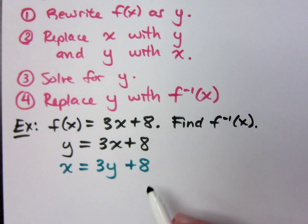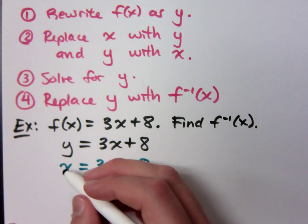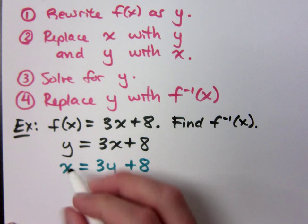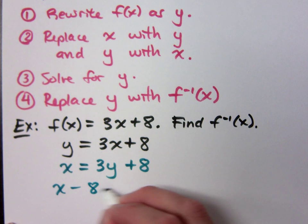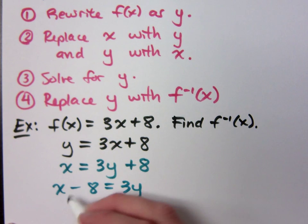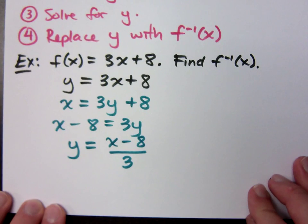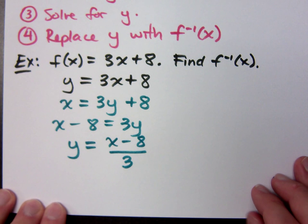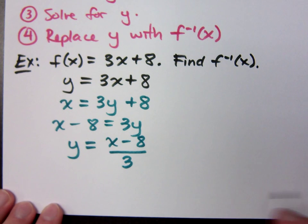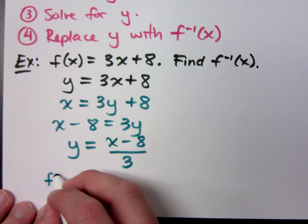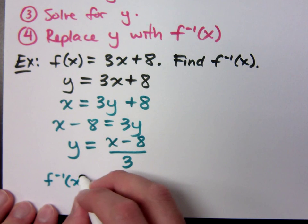Now that I have this, what does the third step say to do? So when I solve for y, I get x minus 8 equals 3y. When I finish solving for y, I get x minus 8 over 3. But the fourth step says to then replace that y with f inverse of x.